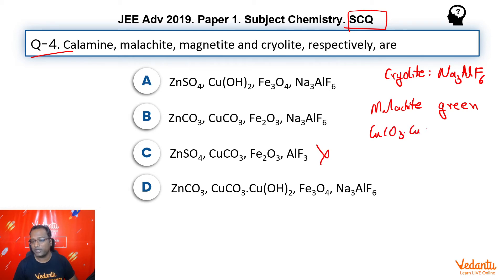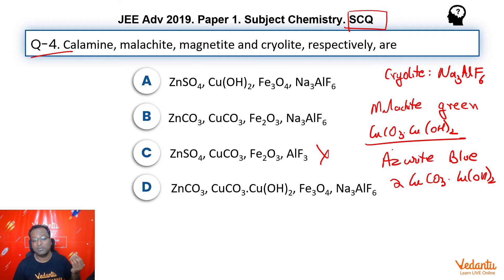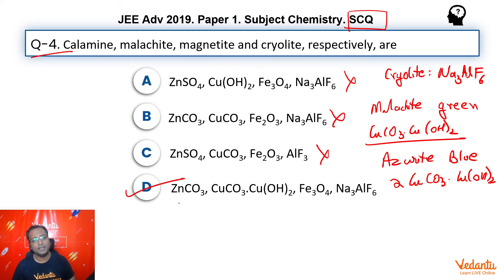Azurite blue is also basic copper carbonate, but the composition is different. Malachite green is basic copper carbonate, and even if you don't remember whether the ratio is 1:2 or 1:1, by option elimination you are left with only option D.